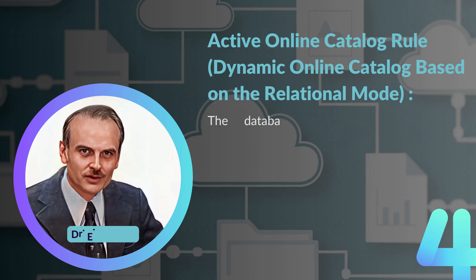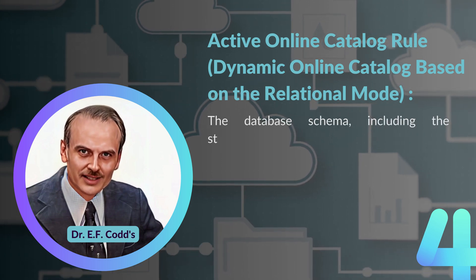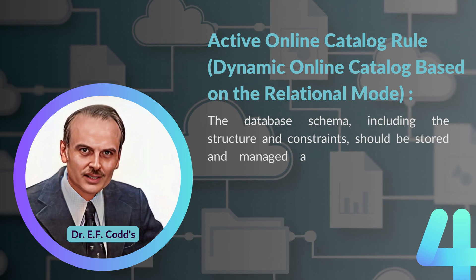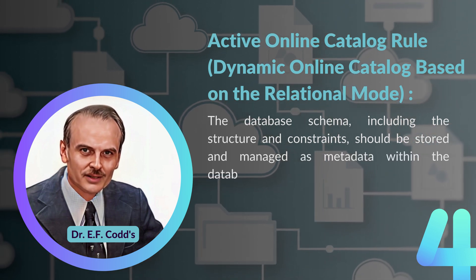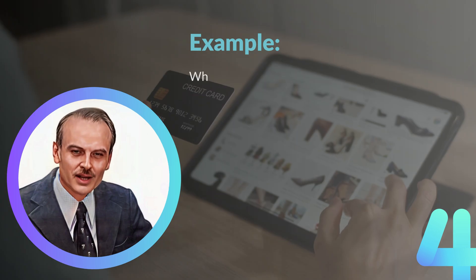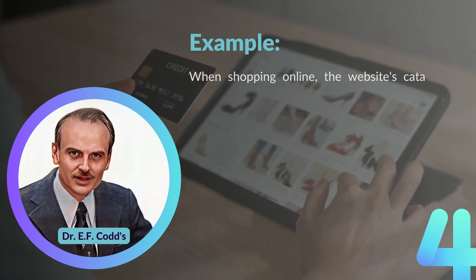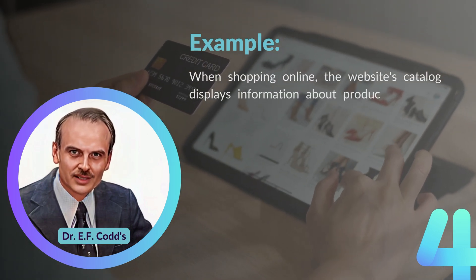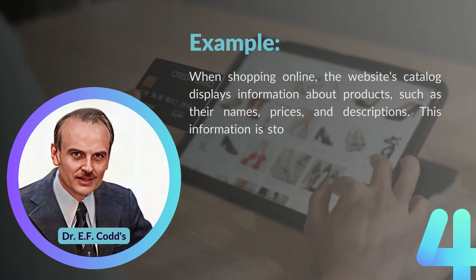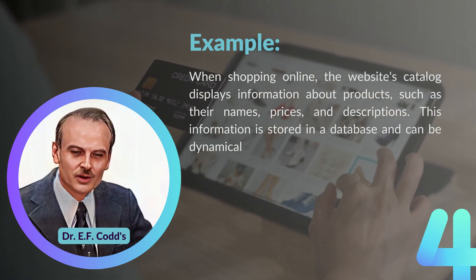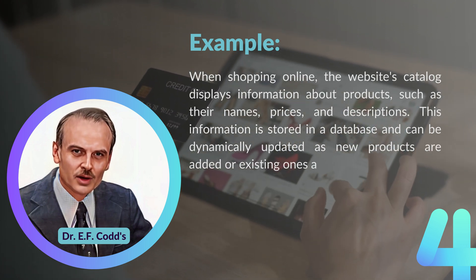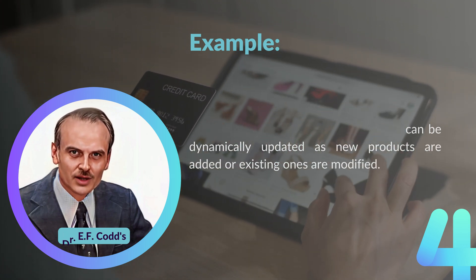Rule number four: Dynamic Online Catalog Based on the Relational Model. The database schema, including the structure and constraints, should be stored and managed as metadata within the database itself. For example, when shopping online, the website's catalog displays information about products such as their names, prices, and descriptions. This information is stored in a database and can be dynamically updated as new products are added or existing ones are modified.